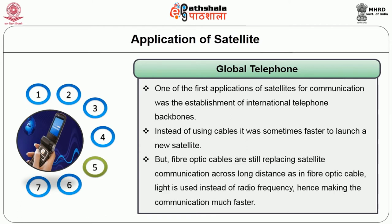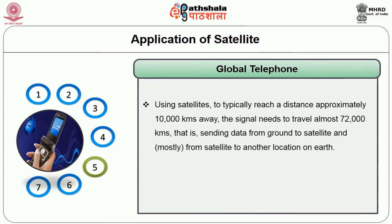But fiber optic cables are still replacing satellite communication across long distances, as in fiber optic cable, light is used instead of radio frequency, making the communication much faster. Using satellites to typically reach a distance approximately 10,000 kilometers away, the signal needs to travel almost 72,000 kilometers — that is, sending data from the ground to the satellite and from the satellite to another location on earth.